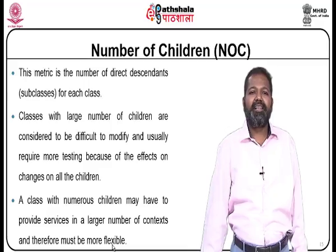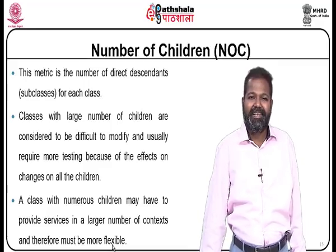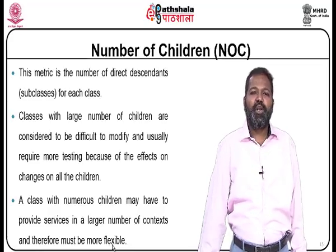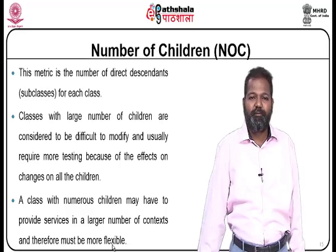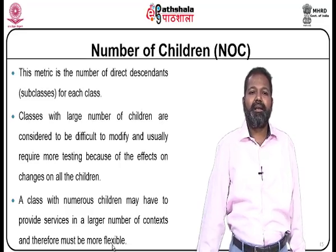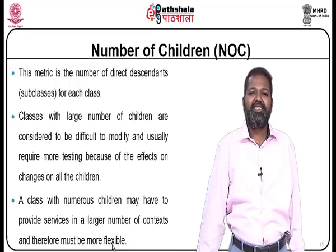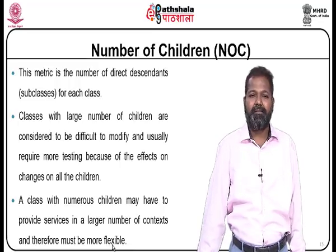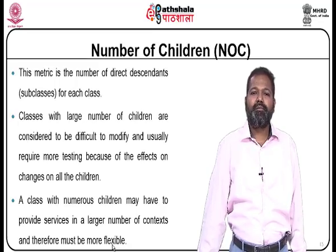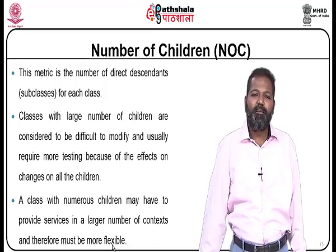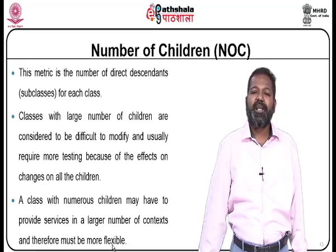The deeper a particular class is in the tree, the greater the potential reuse of inherited methods. Number of children is the number of direct descendants or subclasses for each class. Classes with a large number of children are difficult to modify and usually require more testing. A class with numerous children may have to provide services in a large number of contexts and therefore must be more flexible.